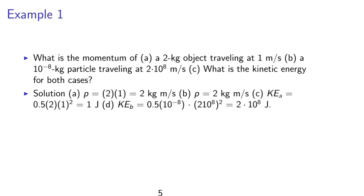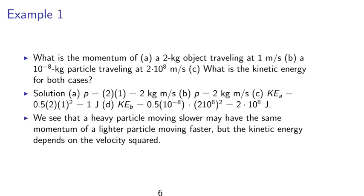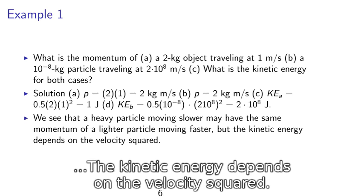(c) The kinetic energy of a is one joule, and the kinetic energy of b we can calculate as two times ten to the eighth joules. We see that a heavy particle moving slower may have the same momentum as a lighter particle moving faster, but the kinetic energy depends on the velocity squared. Thus, the lighter particle is moving with greater kinetic energy.